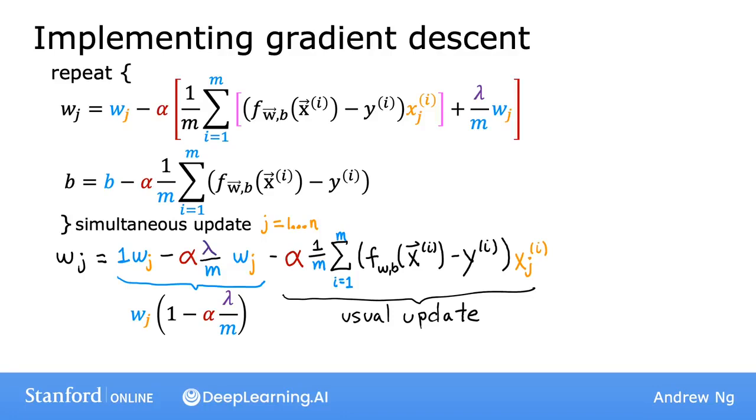And so the only change when you add regularization is that instead of w_j being set to be equal to w_j minus alpha times this term, it's now w times this number minus the usual update. So this is what we had in week one of this course. So what is this first term over here?